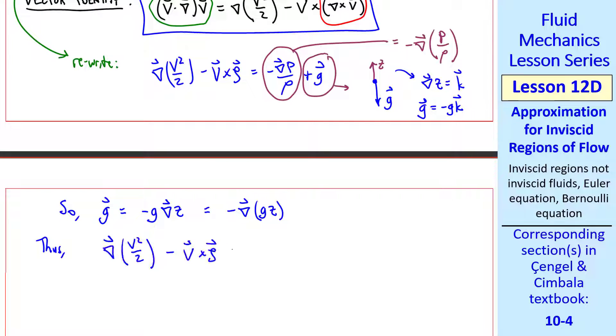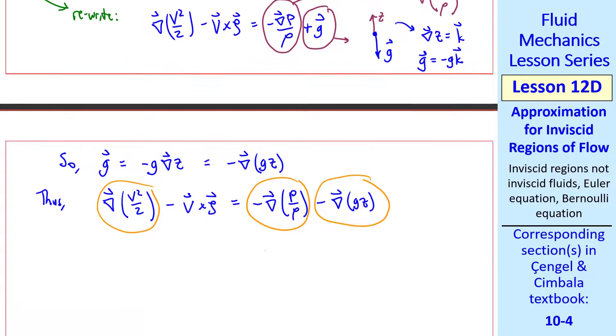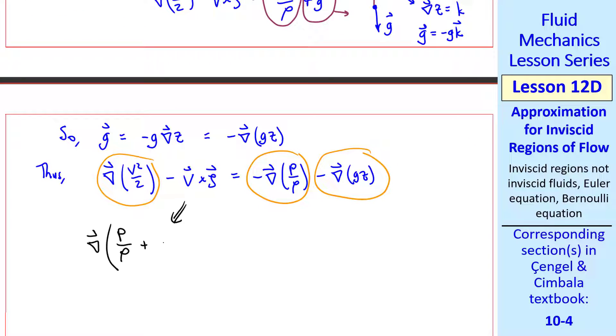Thus our above equation can be written as follows. Now let's combine all three of these terms with a gradient under one roof, so to speak. We have the gradient of the quantity p over rho, plus v squared over 2, plus gz, and moving this term over to the right, we have v cross zeta. This is still the Euler equation, but it's an alternate form.